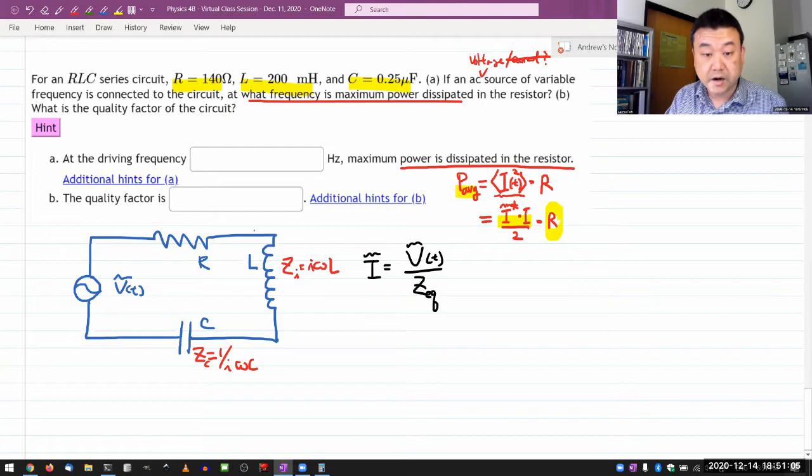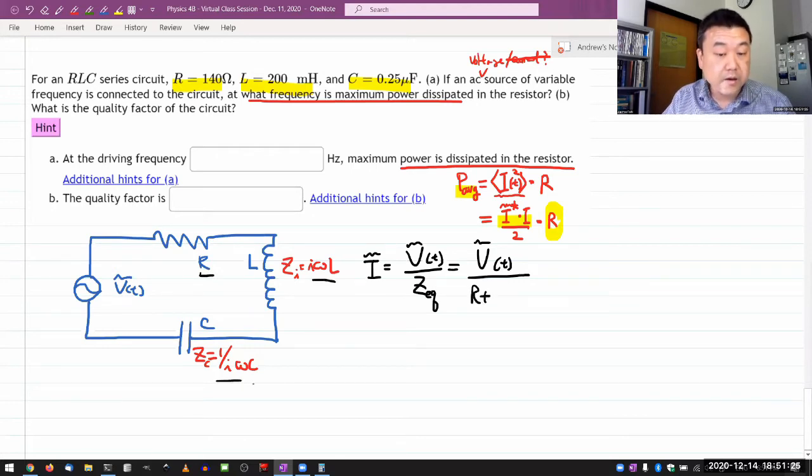So the expression for the current is given by the voltage divided by the equivalent impedance. And with a series RLC circuit, the equivalent impedance is quite simple. You add these resistor-like elements, like resistors in series. So it'll be the resistance R plus, and the other two impedances will have i in front, and I've done this calculation several times before, so I'm just going to write down the result: i times omega L minus 1 over omega C.